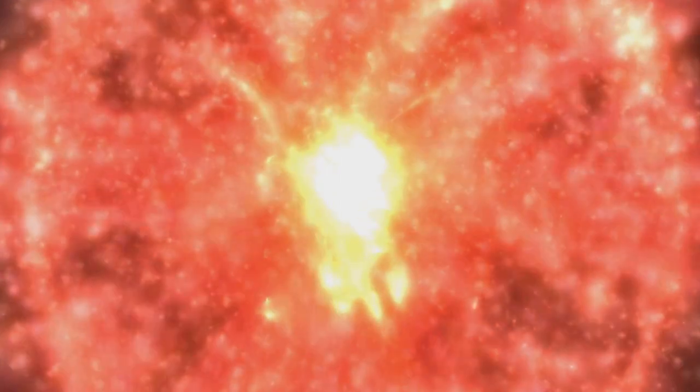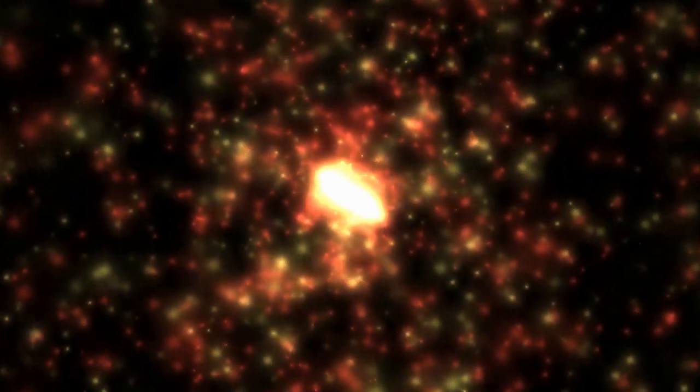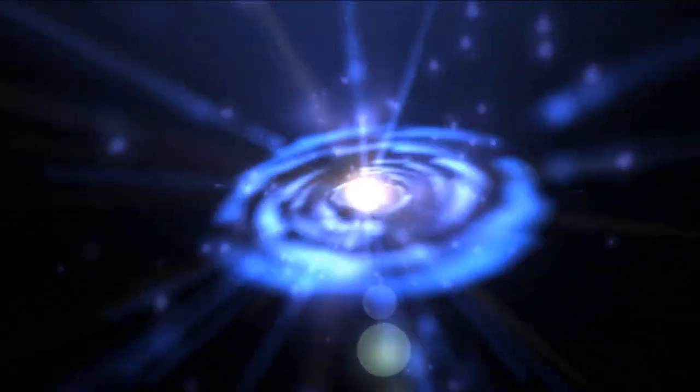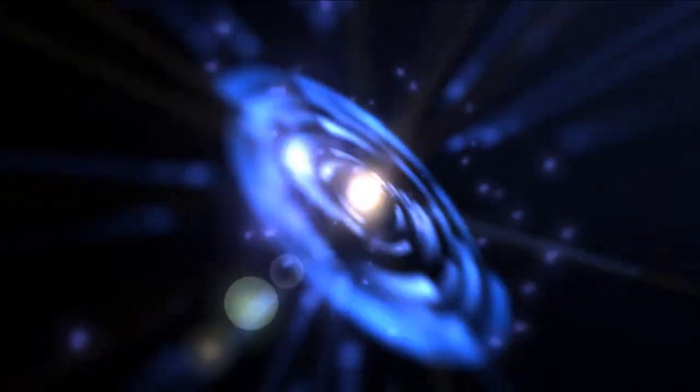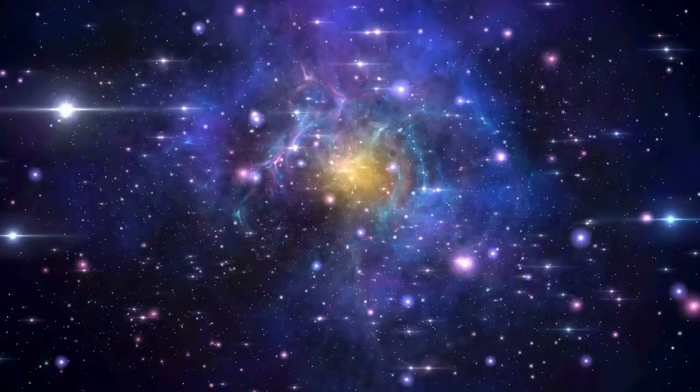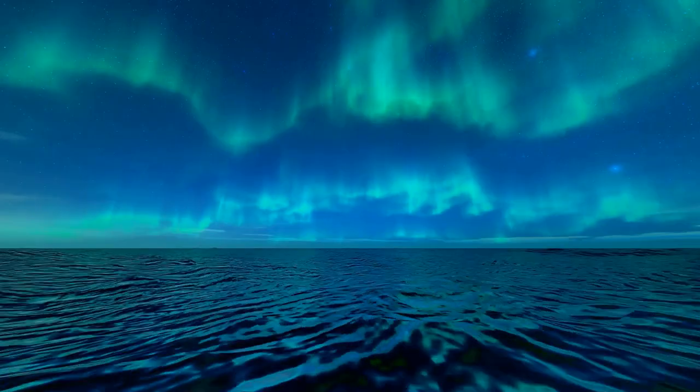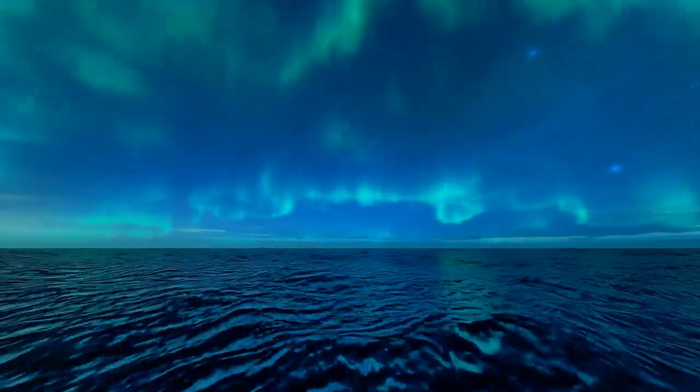We believe that a crucial ingredient is the star's spin. Imagine the core of the collapsing star spinning rapidly as it's crushed by gravity. This spin, amplified during the collapse, can act like a cosmic dynamo, generating an incredibly powerful magnetic field. Another factor might be the star's magnetic field before its death.